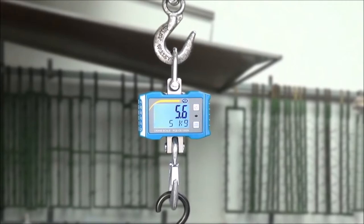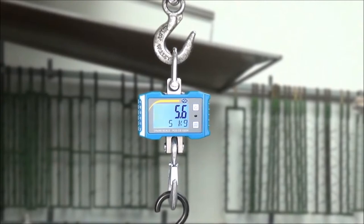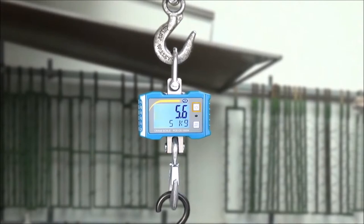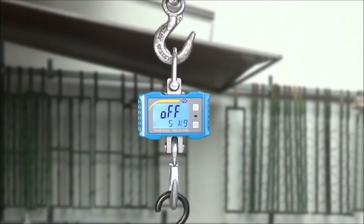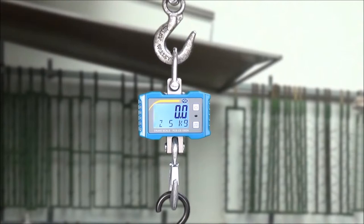Now to shortly demonstrate this automatic zero in. We leave the 5.6 kg hanging on the crane. Turn the scale off by pressing the on off button. And turn it back on. After the so called self test phase, and as you can see the Z in display, the value we saw before on the crane scale is simply ignored from the crane scale. Zeroed.